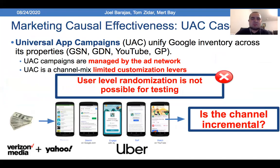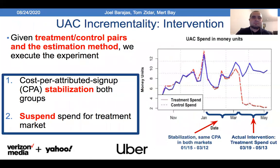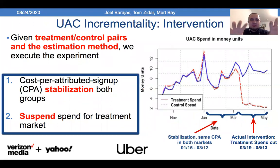The use case shown in this paper is UAC — Universal Ad Campaigns — a Google type of advertising where all Google properties are combined into a single door. It is meant to be effective because Google optimizes across all of them, but advertisers have concerns around limited customizability and it being a black box that doesn't provide a holdout. The treatment intervention involves the treatment and control spend. We stabilize the spend to account for different populations in both markets, based on last-touch attributed CPA, and then suspend the spend — the cut.